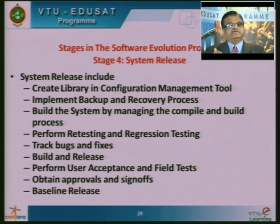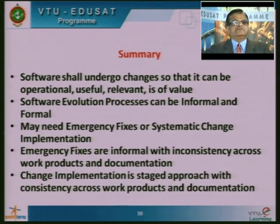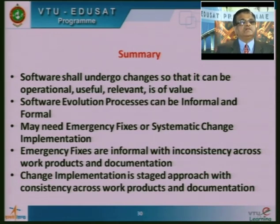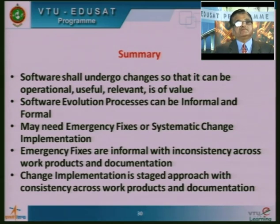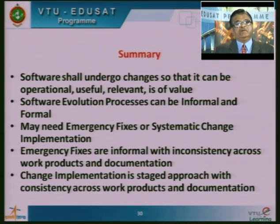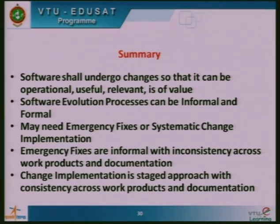After releasing, the customer carries out user acceptance testing and field tests to check stability. Finally, approvals and sign-offs are taken and the release is baselined — no informal changes shall be carried out thereafter. In summary: software must undergo changes to remain operational, useful, relevant, and of value. Software evolution processes can be informal or formal. Emergency fixes are informal with potential inconsistency across work products, whereas systematic change implementation follows a staged approach with consistency across work products and documentation. This concludes our session on software evolution.